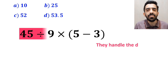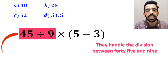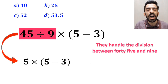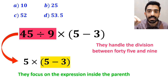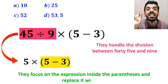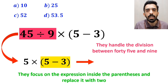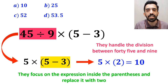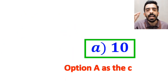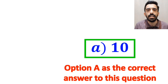Then they handle the division between 45 and 9, and replace this expression with 5 multiplied by 5 minus 3 inside the parenthesis. And the final step, they focus on the expression inside the parenthesis and replace it with 2. So this expression becomes 5 multiplied by 2, which equals 10. Then they quickly look at the options and choose option A as the correct answer.